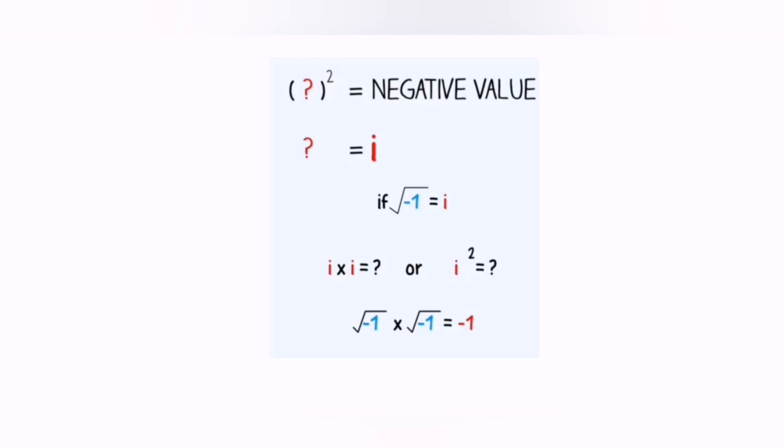Now you'll be able to answer the question. Can you think of a number which, when squared, results in a negative number? Yes, it is i.